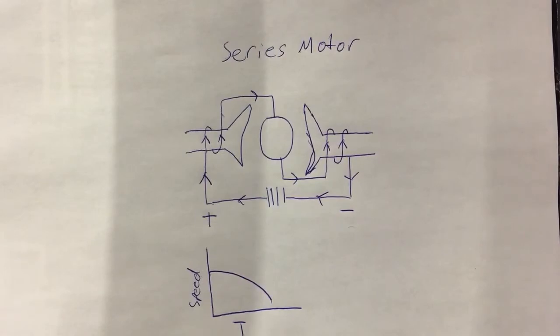Series motors have fast starting speeds, however they slow down drastically as the load they spin increases and the motor needs to produce more torque to rotate the object.